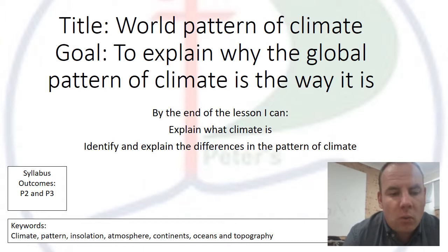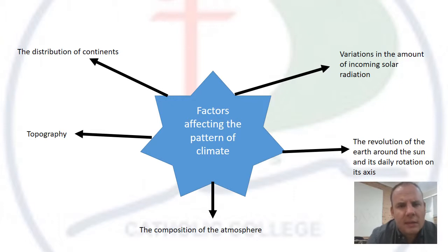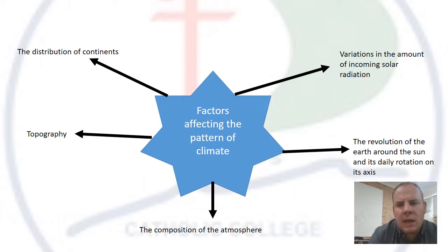There are five reasons or factors that affect global climate. First is the distribution of continents. Second is topography. Third is the composition of the atmosphere. Fourth is the variations in the amount of incoming solar radiation. Fifth is the revolution of the earth around the sun and its daily rotation on its axis.